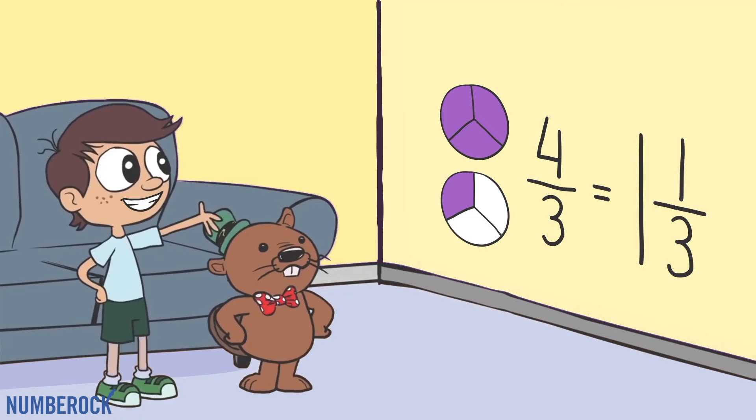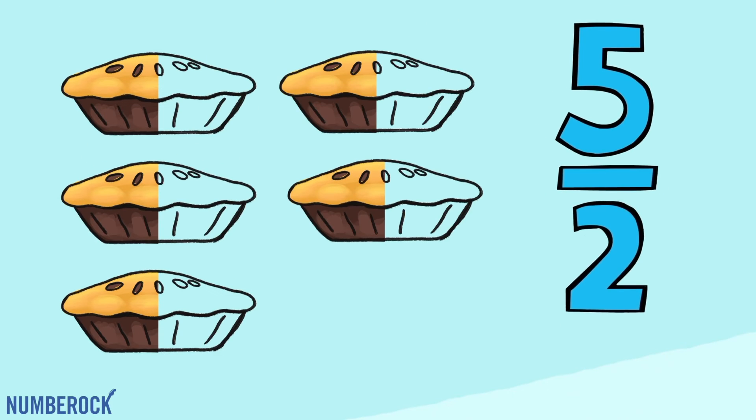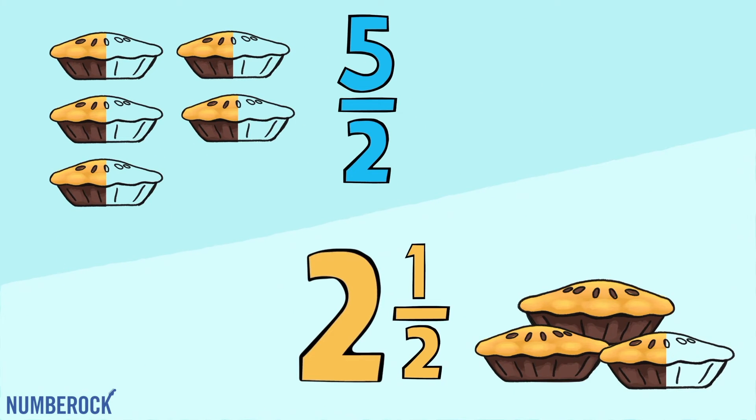Converting to a mixed number makes sense when describing the amount a value represents. For instance, consider 5 halves of apple pie. 2 and a half seems easier to visualize.